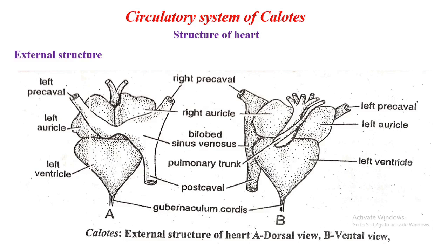The heart of Calotes lies midventrally in the anterior part of the thoracic cavity. As in other animals, the heart is protected inside the thoracic cavity. It is enclosed by a double-layered pericardium — outer parietal and inner visceral pericardium.